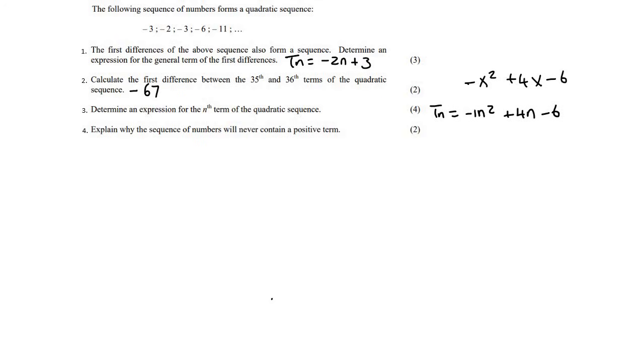Now, we know that to find the turning point, if you've done functions already, you would know that for a parabola, the turning point is always equal to negative B over 2A. And so that's going to be negative 4 over 2 times negative 1, which is going to give us 2. So that's the N value. So N is 2.